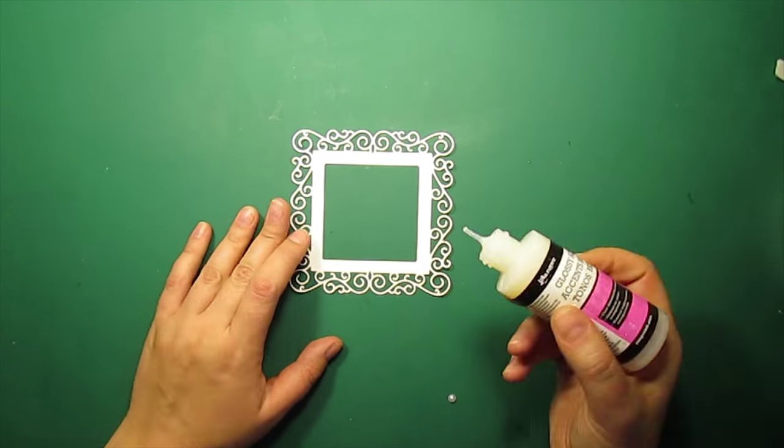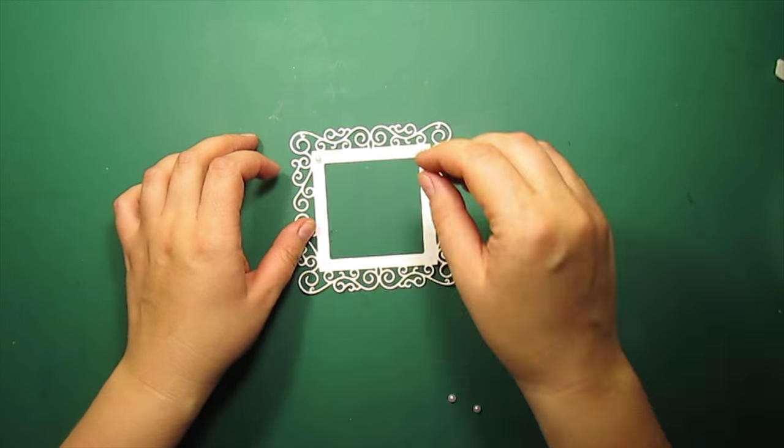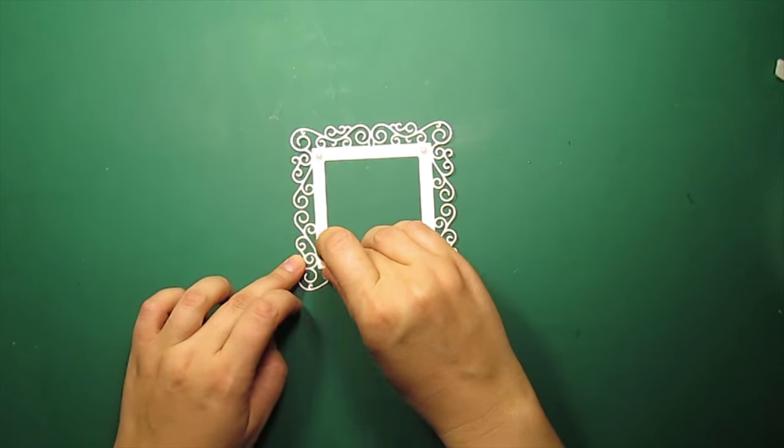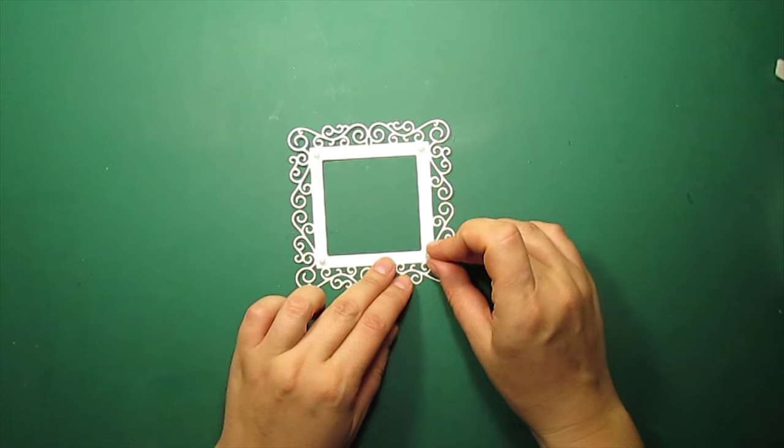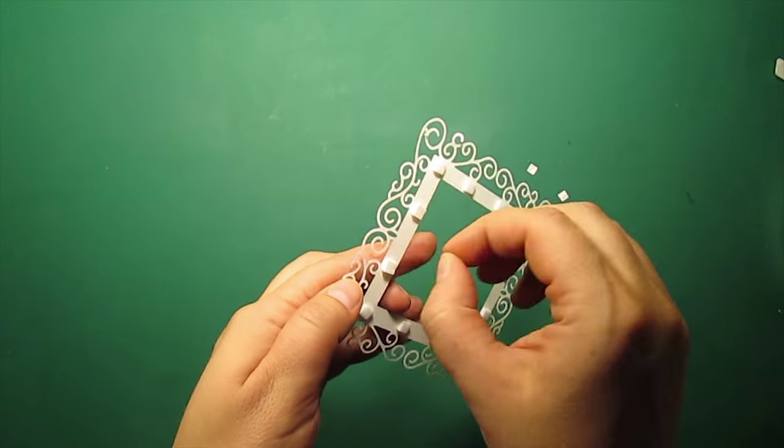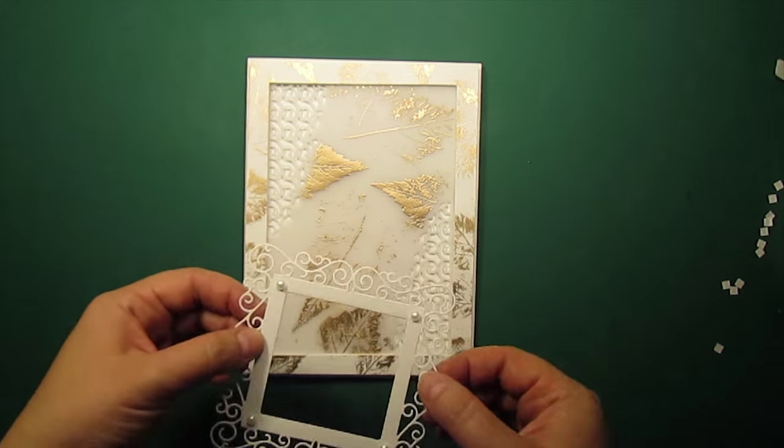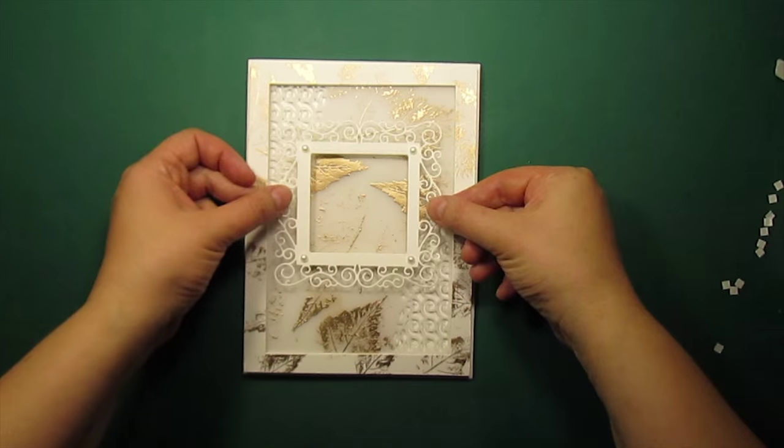I am gluing the half pearls to the corners of the Claudette frame. I am attaching it to the vellum panel with the foam squares.